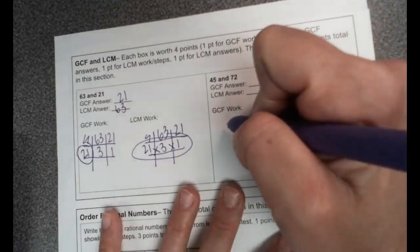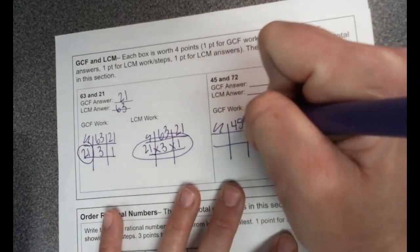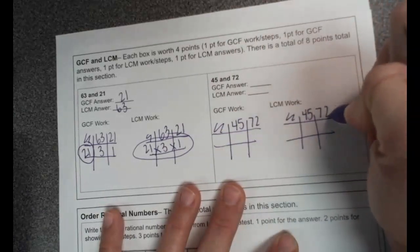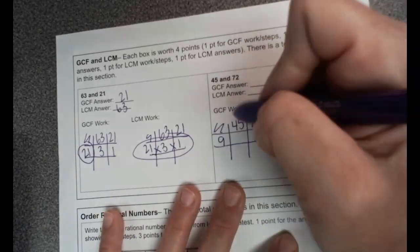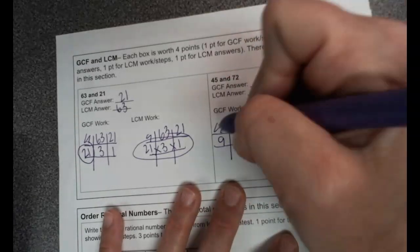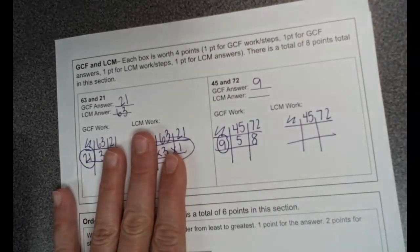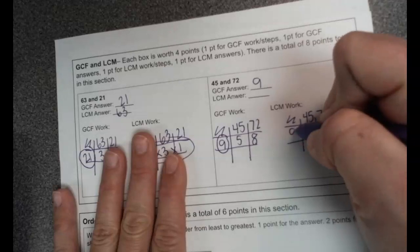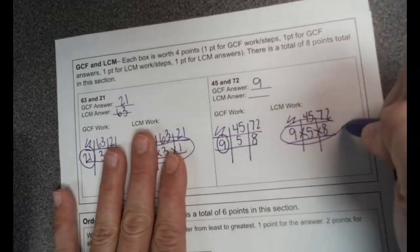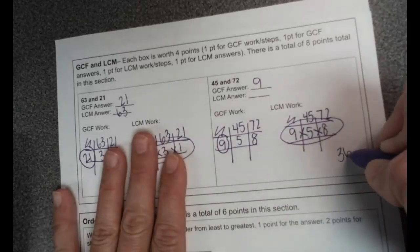Okay, our next one has 45 and 72. I know nine can go into 45 five times, and I know nine can go into 72 eight times. So I can't bring five and eight down, so my answer is nine for the GCF. And over here I'm bringing out that nine again, but it's LCM, so we have to multiply them all together. So nine times five times eight is 360.